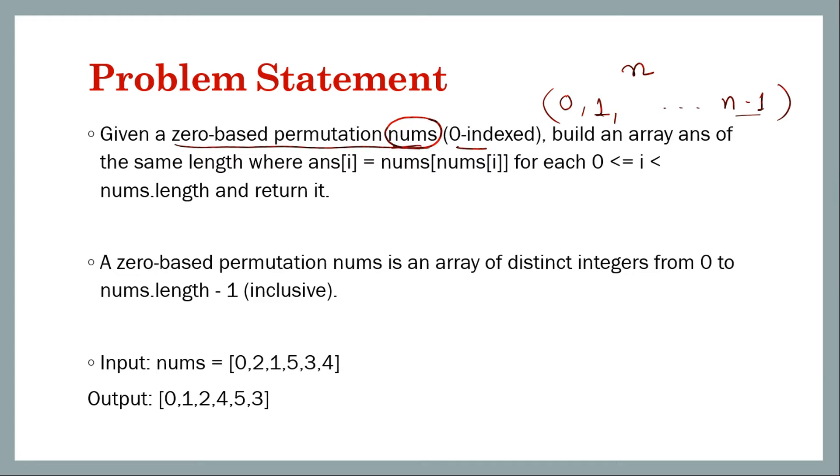Given some input array nums which satisfies this criteria, you have to return a new array with the same elements, but the elements of the result should be such that the ith element is nums[nums[i]].